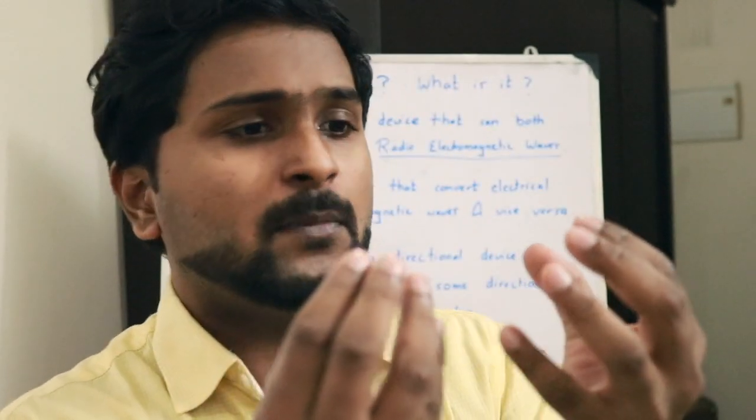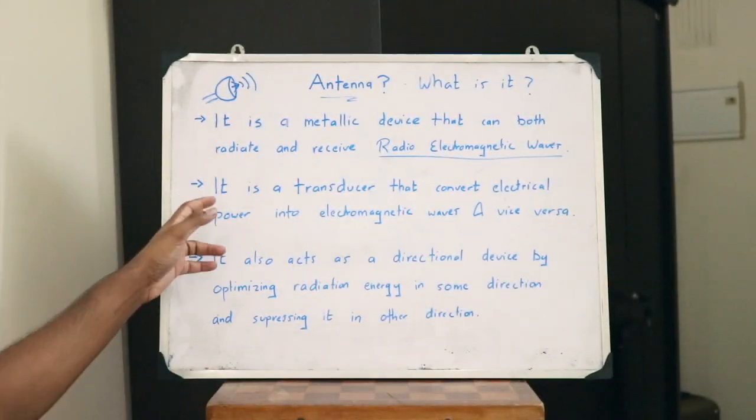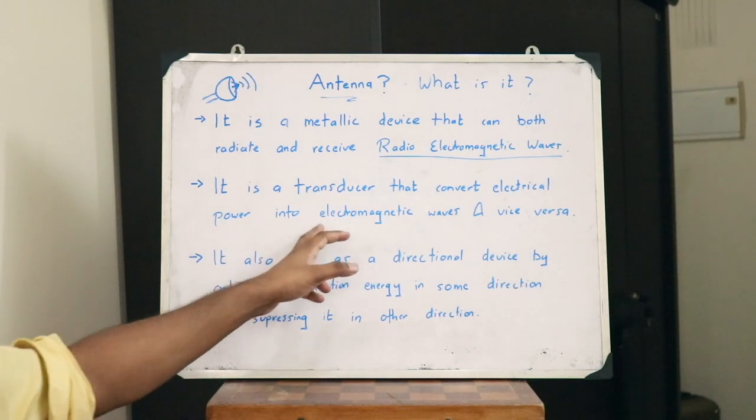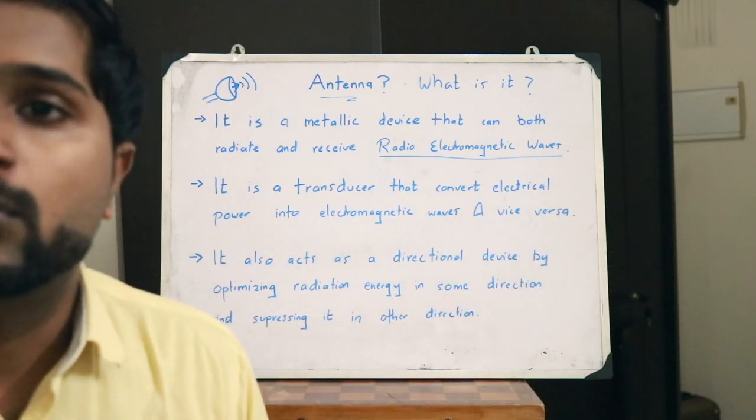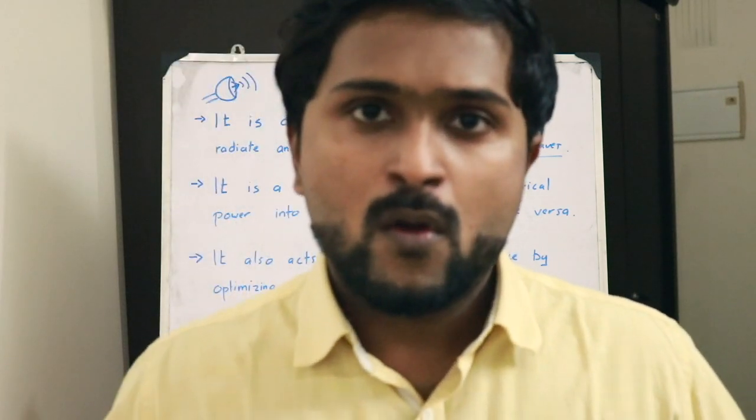As a result, we can say that an antenna acts as a transducer. A transducer is simply a device that converts energy from one form to another. In the case of an antenna, an electrical signal is converted into an electromagnetic field, and hence energy is transformed from one form to another. Therefore, an antenna is a transducer that converts electrical power into electromagnetic waves and vice versa.